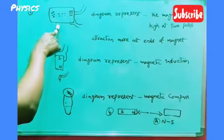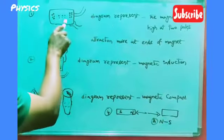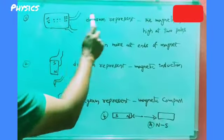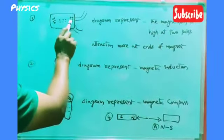See the diagram? This diagram represents magnetism is high at two poles.